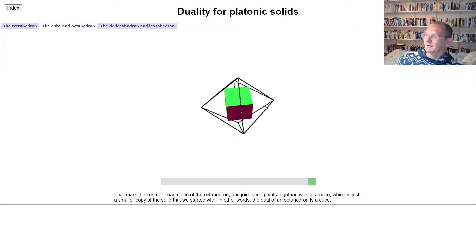So what we say about this is that the cube is dual to the octahedron, octahedron is dual to the cube. We take one of these things, join up the centers of the faces, then we get the other one.